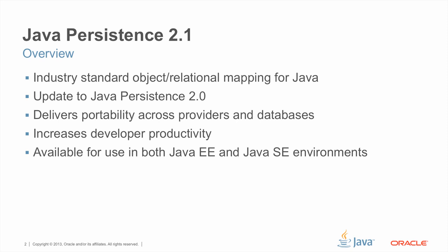JPA 2.1, which is released as part of Java EE 7, is an update to the JPA 2.0 release, which was part of Java EE 6. The Java Persistence API delivers portability across both persistence providers and relational databases. Because it provides a high-level object view of your relational data and frees you from having to map between the tables and columns of relational databases, it increases developer productivity and provides ease of development. And it's available for use not just in Java EE, but also in Java SE environments.